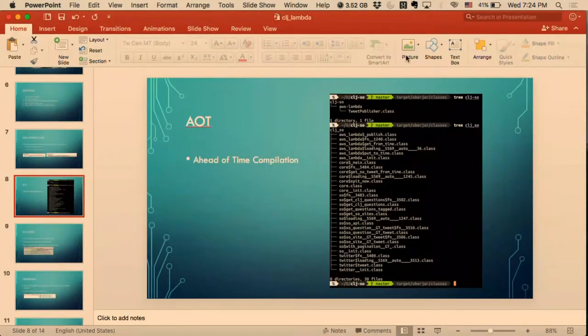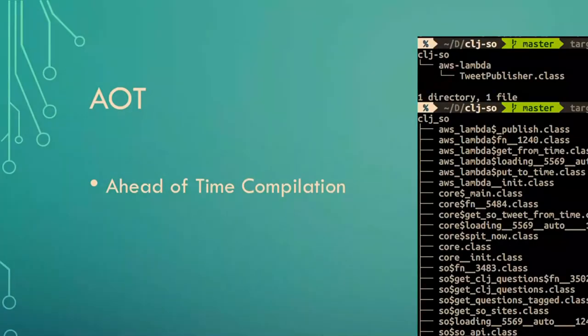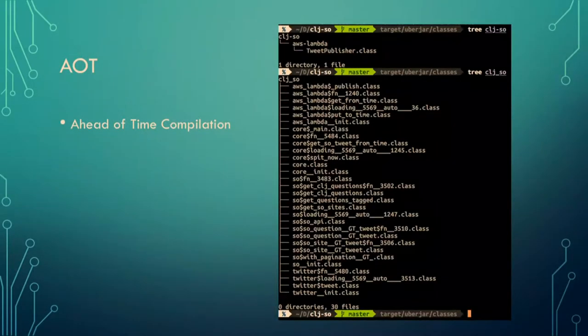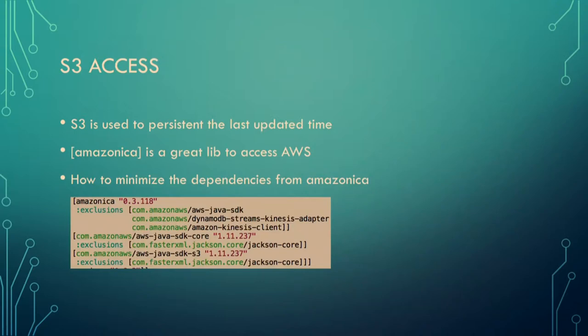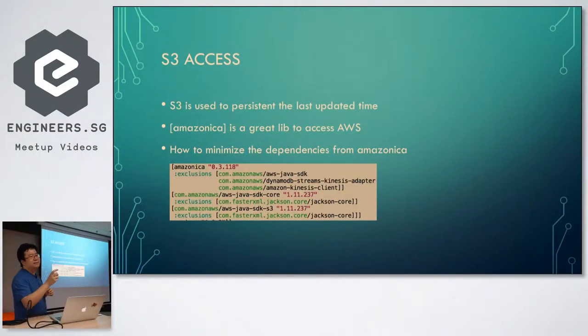That made me very comfortable — I didn't need to touch any of my existing code and logic. I could move it very quickly from the command line to AWS. That's the second problem I mentioned: S3 access. I didn't want to use a database. I just want to save a timestamp, like a single line in a file, so I went with an S3 solution.